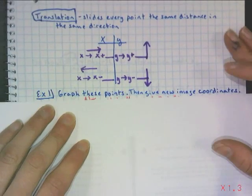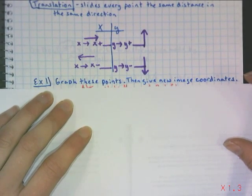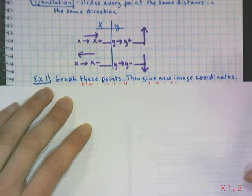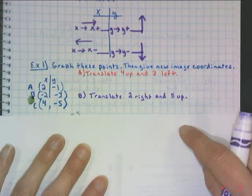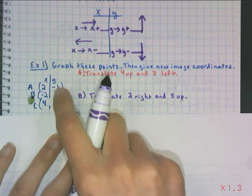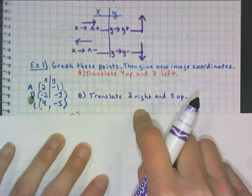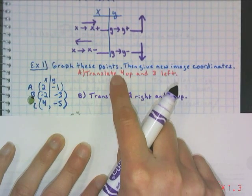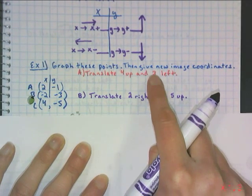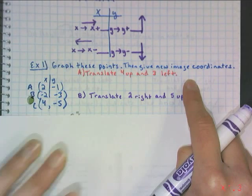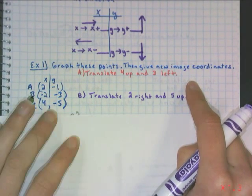You will need graph paper for this. Go ahead and graph these points, then give the new image coordinates after you apply these two translations. Here are your three points and what I want you to do with them. After each translation, I'm asking for the image coordinates. Go ahead and pause and do that.